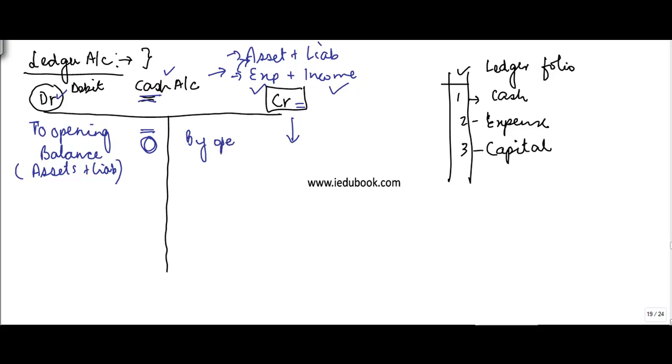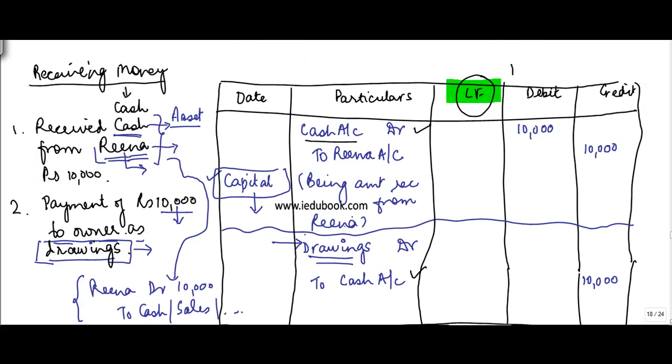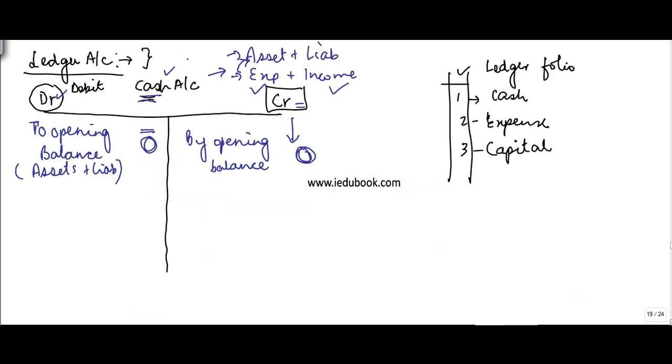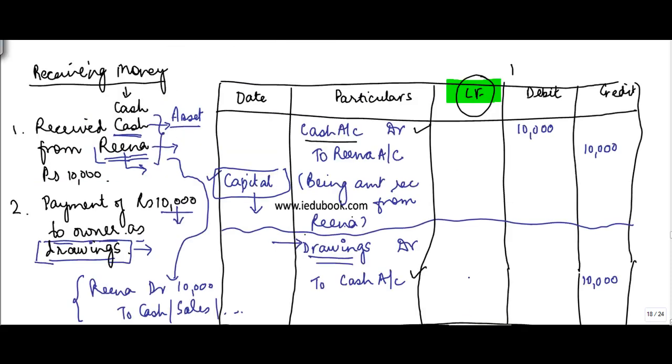Then you keep on recording various transactions. By now you must have understood how journal entries move. It says cash account debit to Rena account. Let's say this cash account was on folio number one, which is written here.